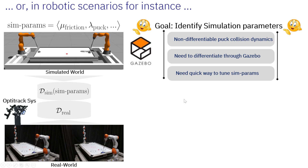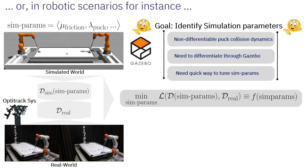To do that, we collected a real-world dataset called DREAL — a set of trajectories of how the puck behaves in the real world, tracked using an OptiTrack system, which is a camera system that tracks the trajectory of the puck on the table. We then defined a loss function as the distance between the data from our simulated parameters versus the real data. As we vary the simulation parameters, we get different trajectory behaviors, and our goal is to find the optimal set of parameters that minimizes this loss.